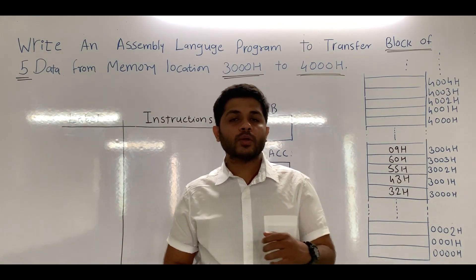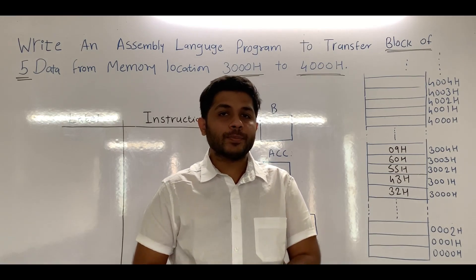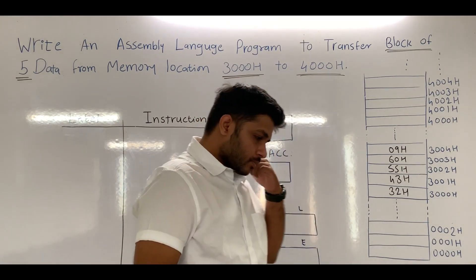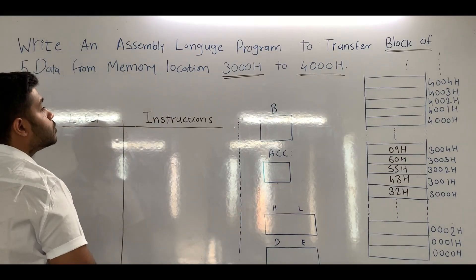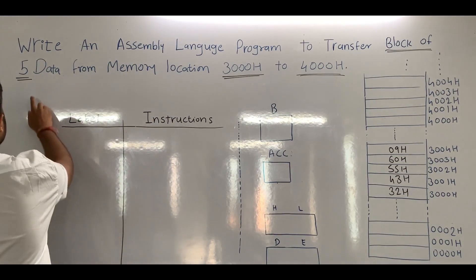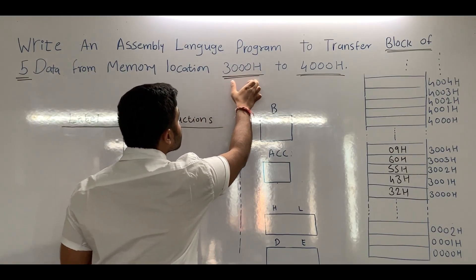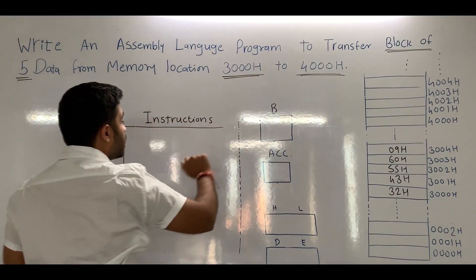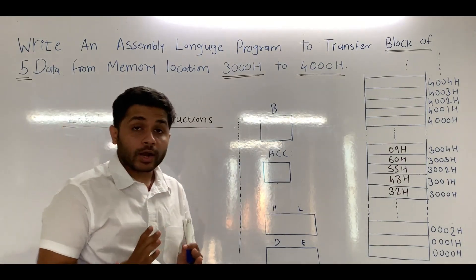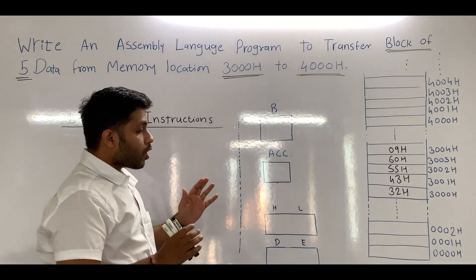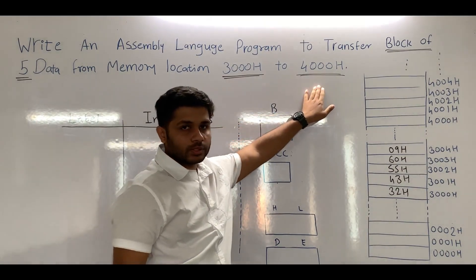Hi everyone, today we are going to see an assembly language program. The program is: write an assembly language program to transfer a block of 5 data from the memory location 3000H to 4000H. We are asked to write an assembly language program to transfer a block of 5 data from 3000H to 4000H.